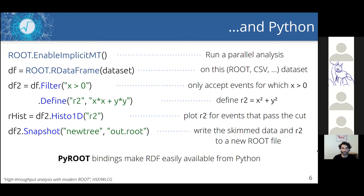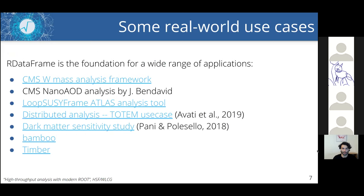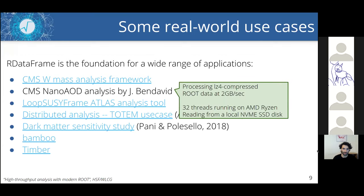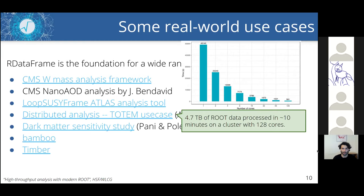This programming model can be executed from Python thanks to PyROOT, the ROOT Python bindings. RDataFrame has been in production in ROOT for a while and it's being used as a foundation for a wide range of applications — from publications to analysis software frameworks. For example, we have a CMS analysis on NanoAOD data that produced almost 6,000 histograms, recently presented at the EP Software Seminar in October.